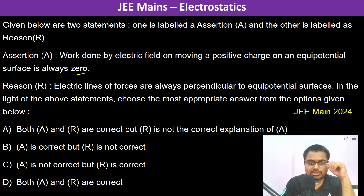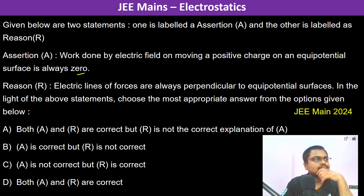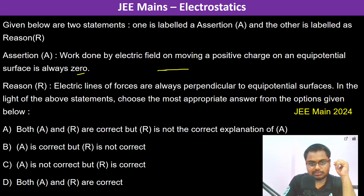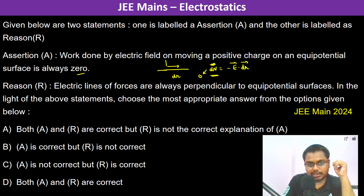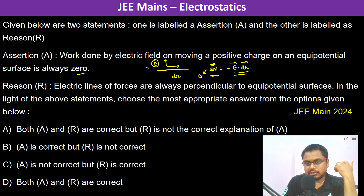Why? Because moving a positive charge on an equipotential surface means dV is zero. We know dV = -E·dr. Since dV is a scalar quantity and equals zero, and the electric field points in a specific direction along dr, the dot product E·dr must equal zero.